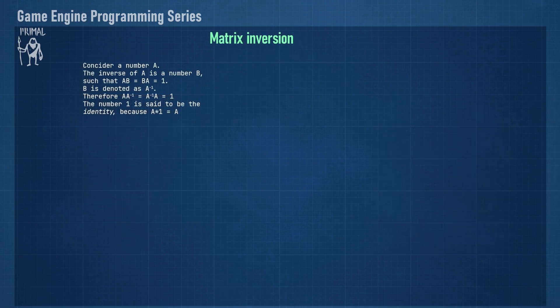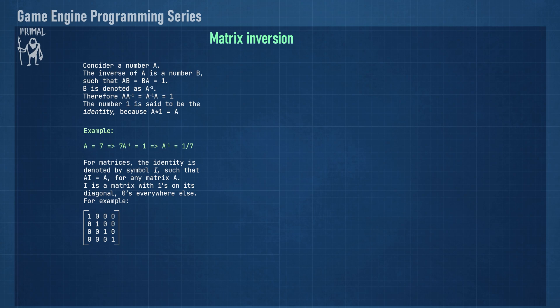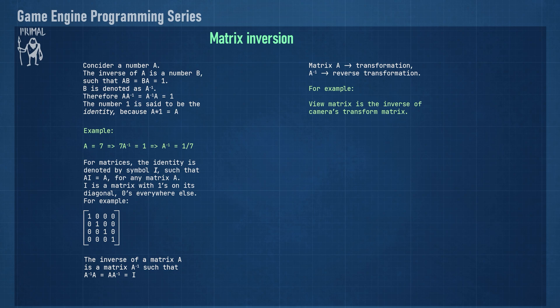Let's consider a number a, the inverse of which is another number b, such that a times b equals 1. b is denoted as a to the power of minus 1, and therefore a times the inverse of a equals 1. The number 1 is the identity element because multiplying any number by 1 results in the identical number. For matrices, the identity is denoted by letter I and is a matrix with 1s on its diagonal and 0s everywhere else. Its dimension always matches the dimension of the matrix we are working with. Similar to a scalar number, multiplying a matrix with its inverse will always result in the identity matrix. When we think of a matrix as a transformation, the inverse corresponds to reversing that transformation. For example, the view matrix is the inverse of the camera's transform matrix because we need to reverse the camera's position and rotation and apply that reversal to all objects in world space in order to get them to the view space.